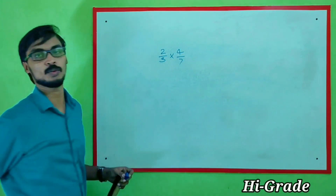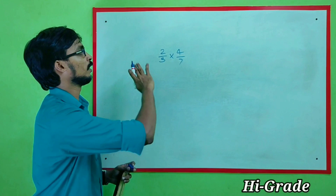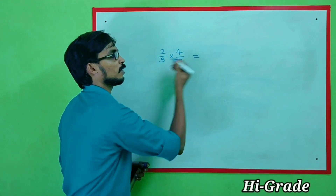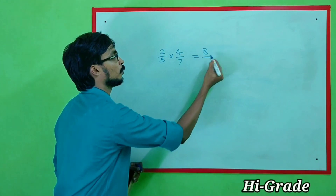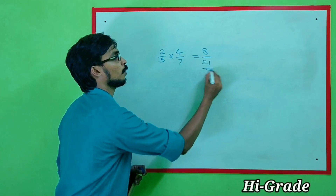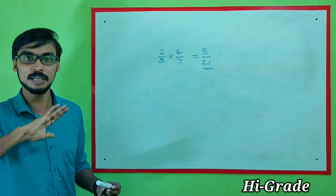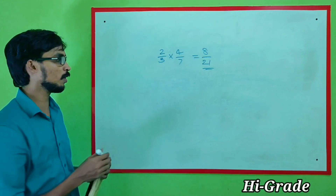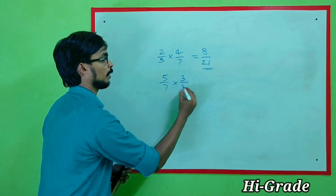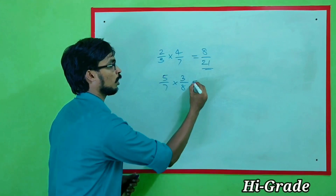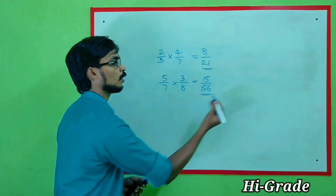Now we will do 2 by 3 multiplied by 4 by 7. We will multiply the numerator and denominator: 2 into 4 is 8, by 3 into 7. We will multiply: 5 by 7 into 3 by 8. 5 into 3 is 15, divided by 7 into 8 is 56.